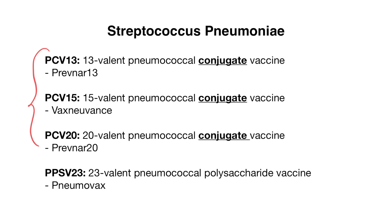Before we go over the old and new recommendations, let's cover a little history. In the 1980s and 1990s, Pneumovax or PPSV23 — the polysaccharide vaccine — was the only available pneumococcal vaccine. With the approval of the conjugate vaccines, guidelines became more complex because you had to begin considering the age of the patient as well as underlying comorbidities.